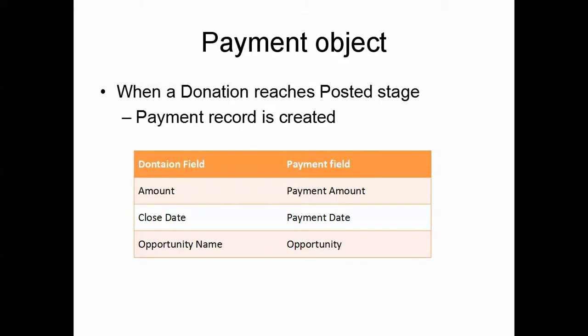When our donation reaches the posted stage, a payment record is automatically created. Some of the fields of the donation are copied to the payment record. For example, the amount field is copied to the payment amount, the close date field is copied to the payment date, and the opportunity name is copied to the opportunity field of the payment record.